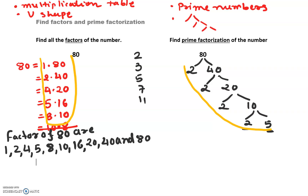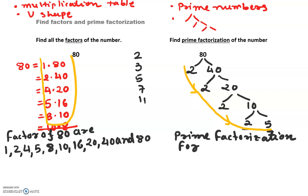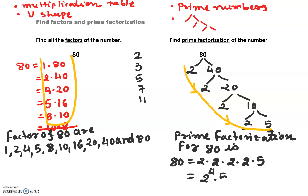We can't do any further breakdown, so let's write the prime factorization by drawing a line from the upper left corner going to the lower right corner. My prime factorization equation for 80 is 2 times 2 times 2 times 2 times 5. Since 2 shows up 4 times, that's 2 to the 4th power times 5. This is our prime factorization for 80.